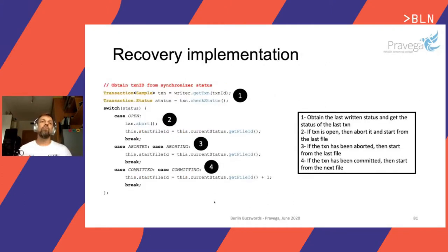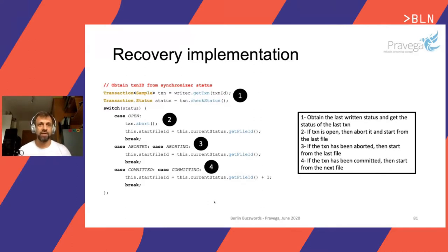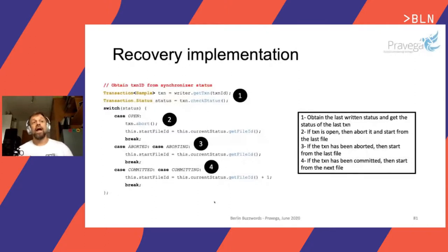For recovery, once the application starts, it gets the synchronizer state, checks the status of any outstanding transaction. If it's still open, the application aborts it. If it's aborting, it starts from the given file ID assuming it hasn't been done yet. If it's committed, it moves to the next file. Aborting the open transaction is not strictly necessary since Pravega would eventually time out and remove it, but it's good practice to remove unnecessary data.